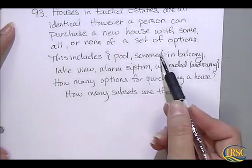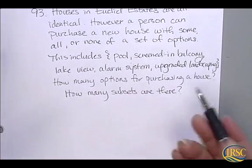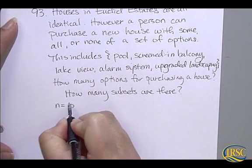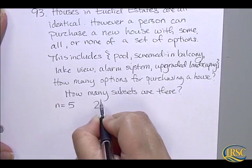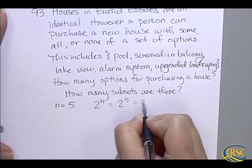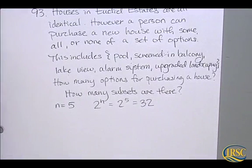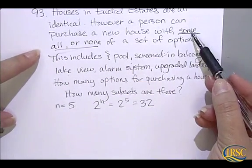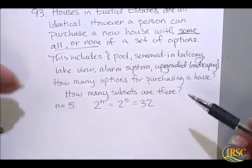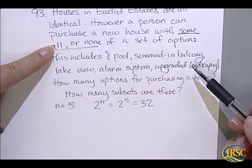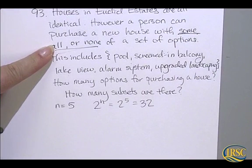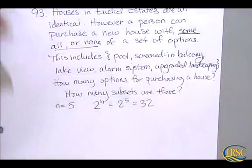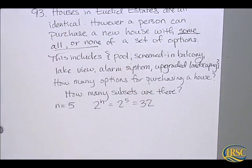We're looking at all the different subsets that are possible, so the real question is how many subsets are there. There are 1, 2, 3, 4, 5 elements. So n equals 5, and the formula is 2 to the n, so 2 to the 5th equals 32. There are 32 subsets. They were telling you that you could have some, all, or none — which means you include the set itself and the empty set. So all of the subsets is what you want, giving you 32.